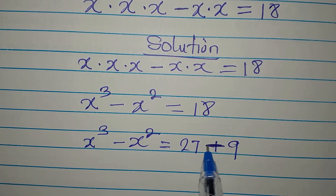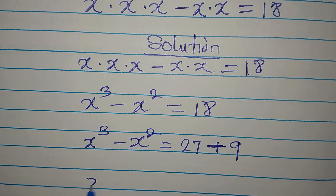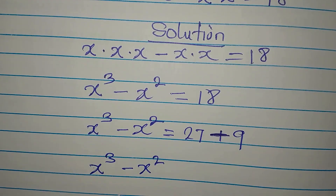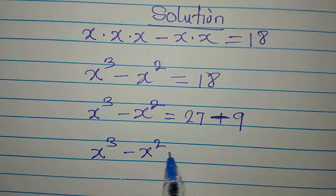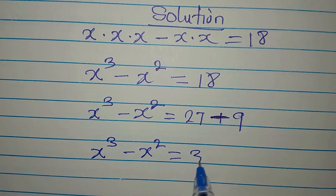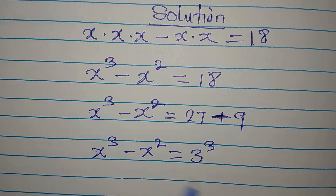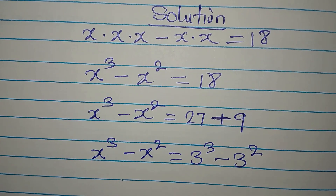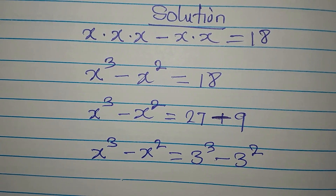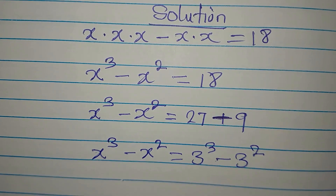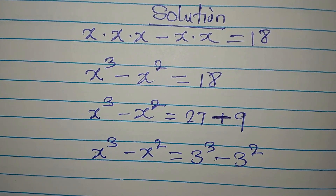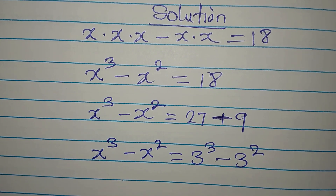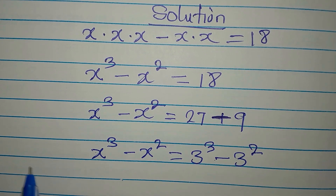So we have x to the power of 3 minus x to the power of 2 equals 27, which is 3 to the power of 3, minus 9, which is 3 squared. Now you can compare the left-hand side and the right-hand side. If not for the fact that we are looking for the complete solution, we would have concluded that x is equal to 3 — but let's continue.